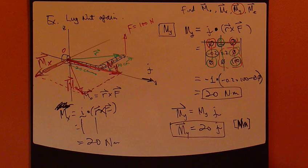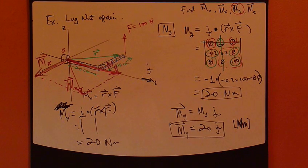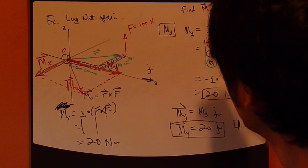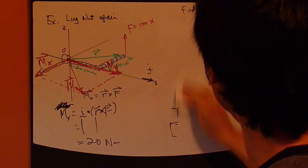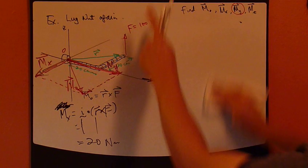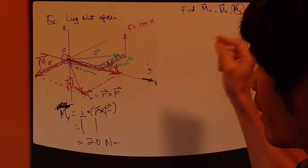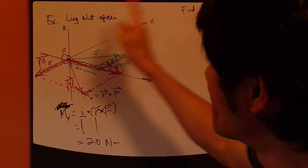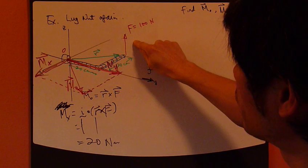What about m_z? Well, the moment about the z-axis. It could be a little tricky now. m_z. Look at this force direction. The force is applied along the z-axis. Now, you're trying to calculate the moment of this force about point z.